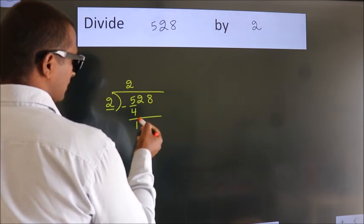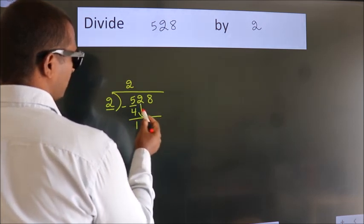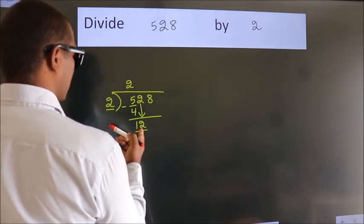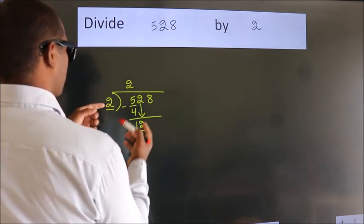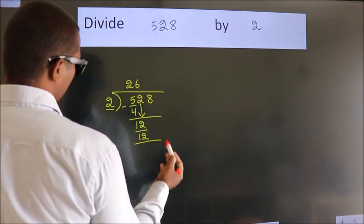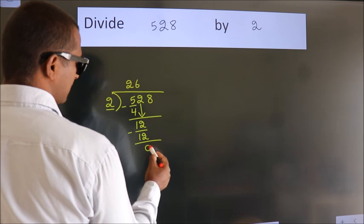After this, bring down the beside number. So 2 down, so 12. When do we get 12? In 2 table, 2 6, 12. Now we subtract. We get 0.